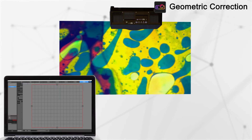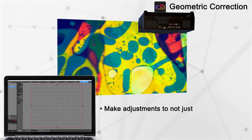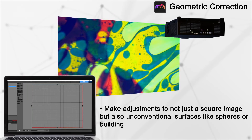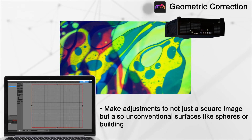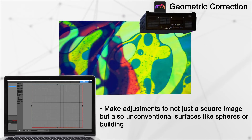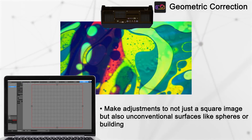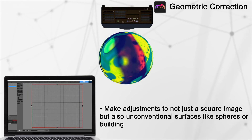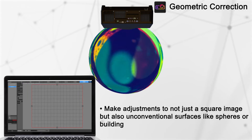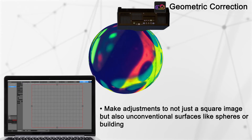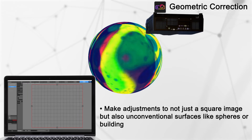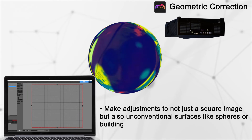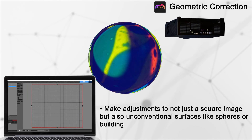All installations are not equal, nor are every projector screen a flat rectangle, and the geometric correction panel is here to help. Geometric correction provides the adjustments to not only square the image to the screen, but also to make sure the image perfectly fits on any object or surface you're projecting onto.